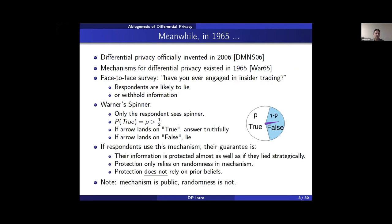The interviewer does not see the spinner and does not know if the respondent lied, but does know the probability of a lie, which is 1 minus P. With randomized response, the respondent's private information is protected almost as well as if they just lied whenever it suited them. The protection only depends on the randomness in the spinner — it does not depend on any prior beliefs the attacker might have about the data.